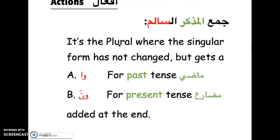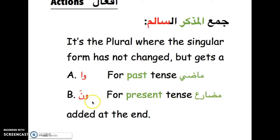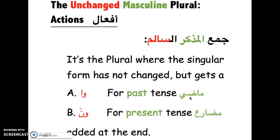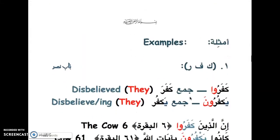It's a plural form where the singular form has not changed, but gets a waw-alif at the end for the past tense (madi), or waw-noon at the end for the present tense (mudare). Notice the fatha on top of the noon — this is very important. Next we'll deal with examples.